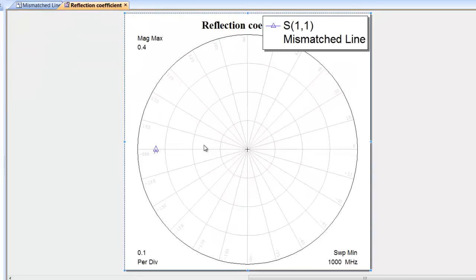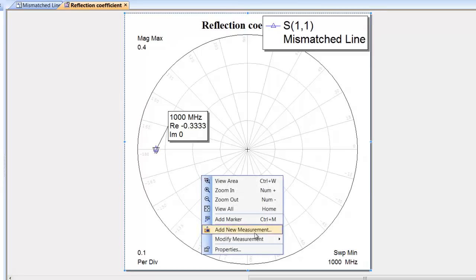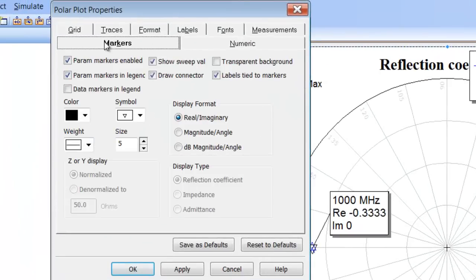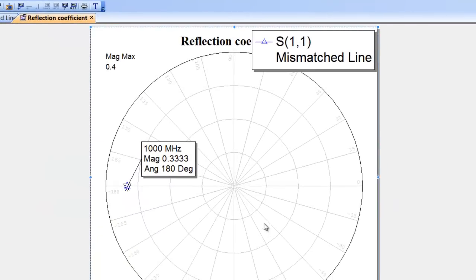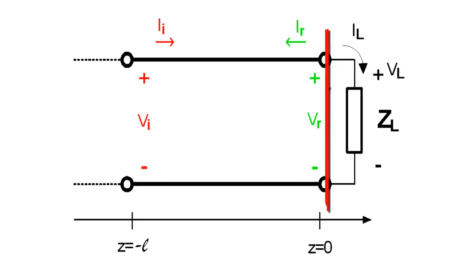OK, so let's add a marker. Just press CTRL-M and then click on the point of interest, and then we can also change the way that the marker is displayed by right clicking, going into properties, markers, and then choosing magnitude and angle and apply. OK. So as you can see, we've got a magnitude of 0.33, so it's about a third, and an angle of 180 degrees. What happens if we start changing the length of the transmission line, thereby effectively taking ourselves at a different point along the line? OK. At the moment we are measuring right here, and we've obtained a reflection coefficient of a third in magnitude and 180 degrees in phase.